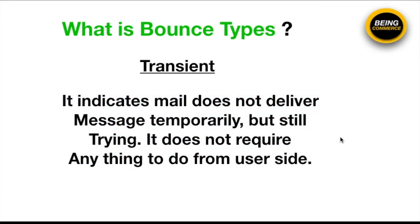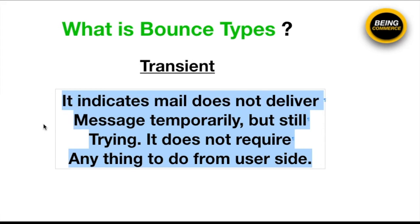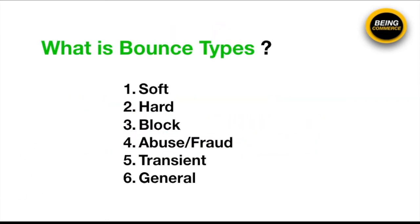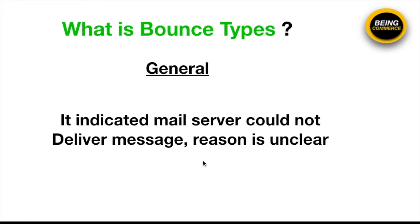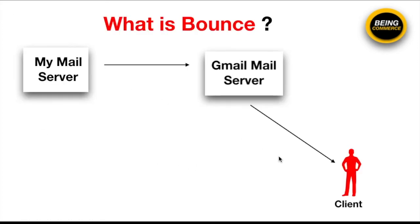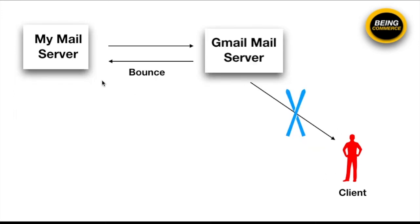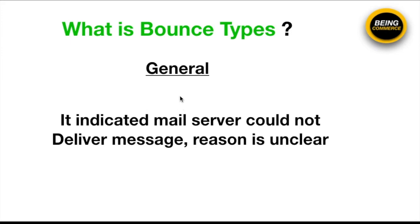A transient bounce indicates that the mail did not deliver the message temporarily but is still trying. It does not require any action from the user side — it will automatically get delivered after some time. Finally, a general bounce is when your mail server sends a message, it does not get delivered and bounces back, but there is no valid reason for that bounce. It is then counted as a general bounce.